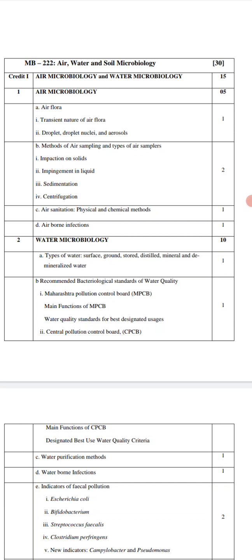The first point under water microbiology is types of water, which consists of surface water, ground water, stored water, distilled water, mineral water, and demineralized water. We will study the differences between each type when we start the actual water microbiology chapter.